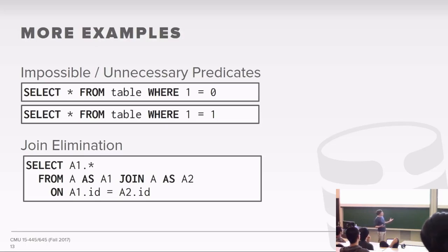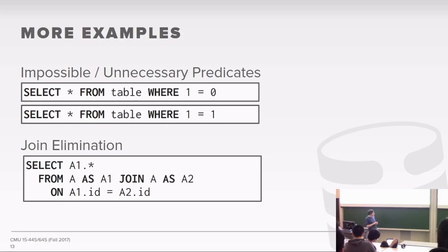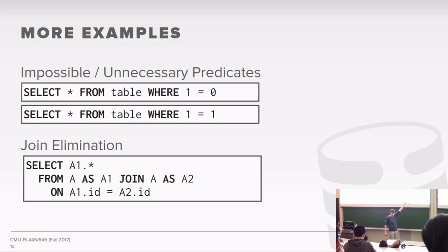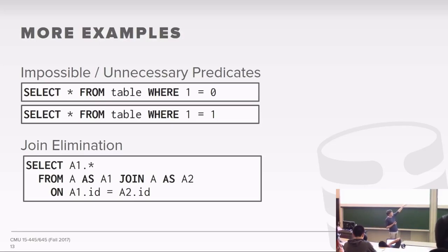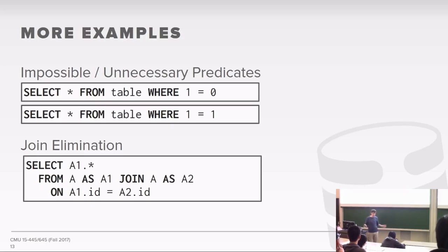In the case of 'where 1 = 1', that's always true, so we don't need to evaluate this predicate for every single tuple — just do a sequential scan without any where clause at all. Another more nuanced example is a self-join on a primary key: 'select * from A a1, A a2 where a1.id = a2.id'. Since it's a primary key, they always match, so this is equivalent to just 'select * from A' without doing a join at all.